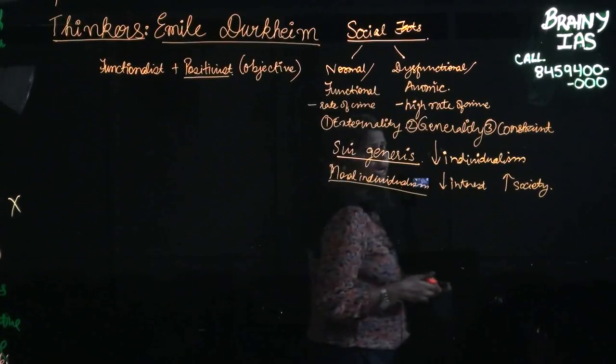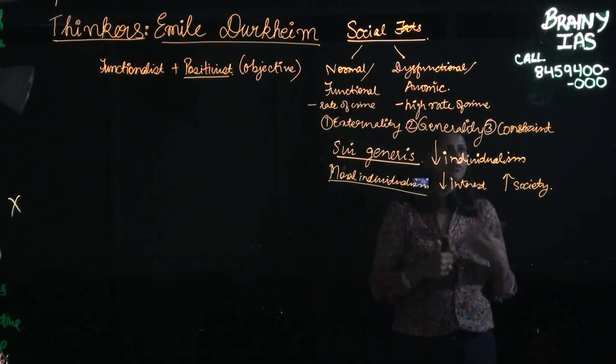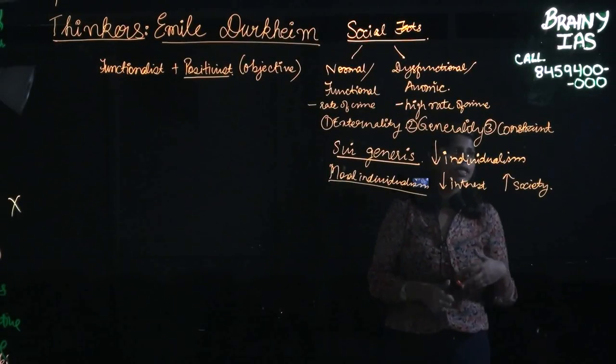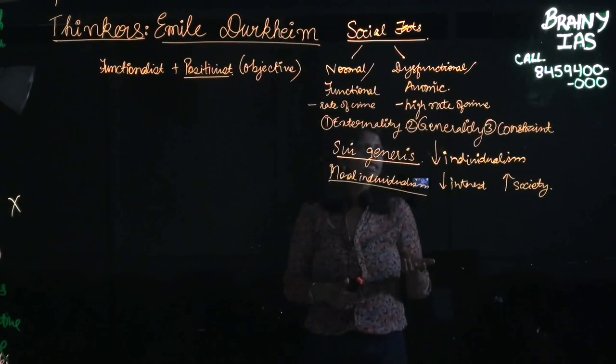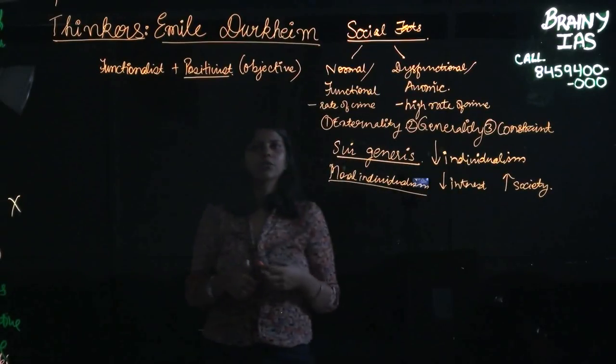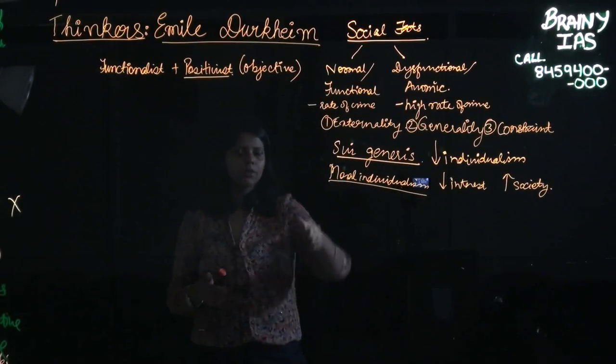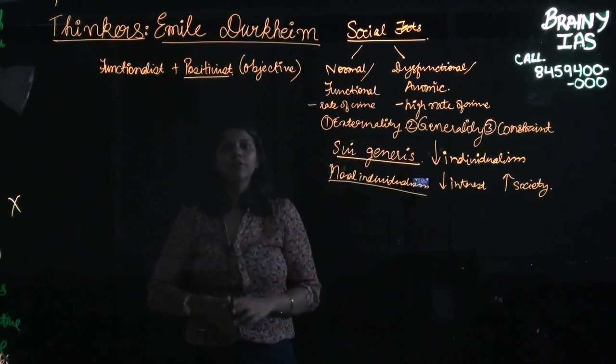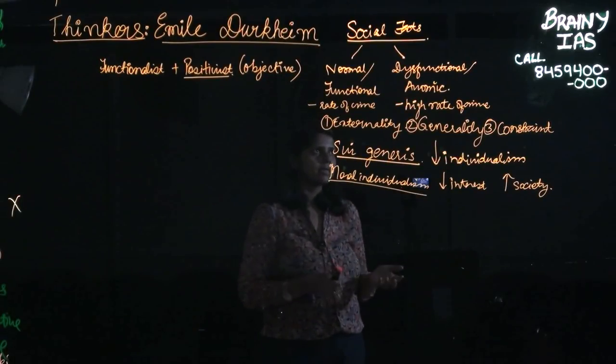Furthermore, he also sees moral individualism as a way to further bring things back on track. Now, as a functionalist, he of course sees utility in everything. So here also he tries to prove that an individual only will have utility once he is a part of the bigger system.